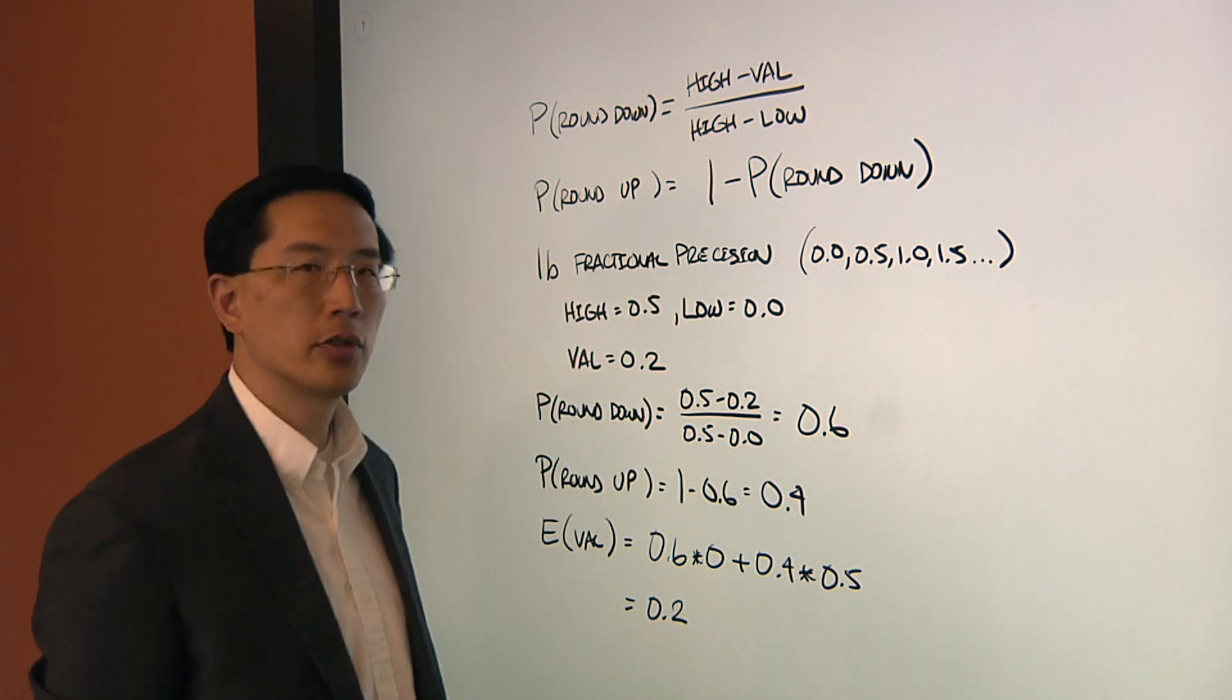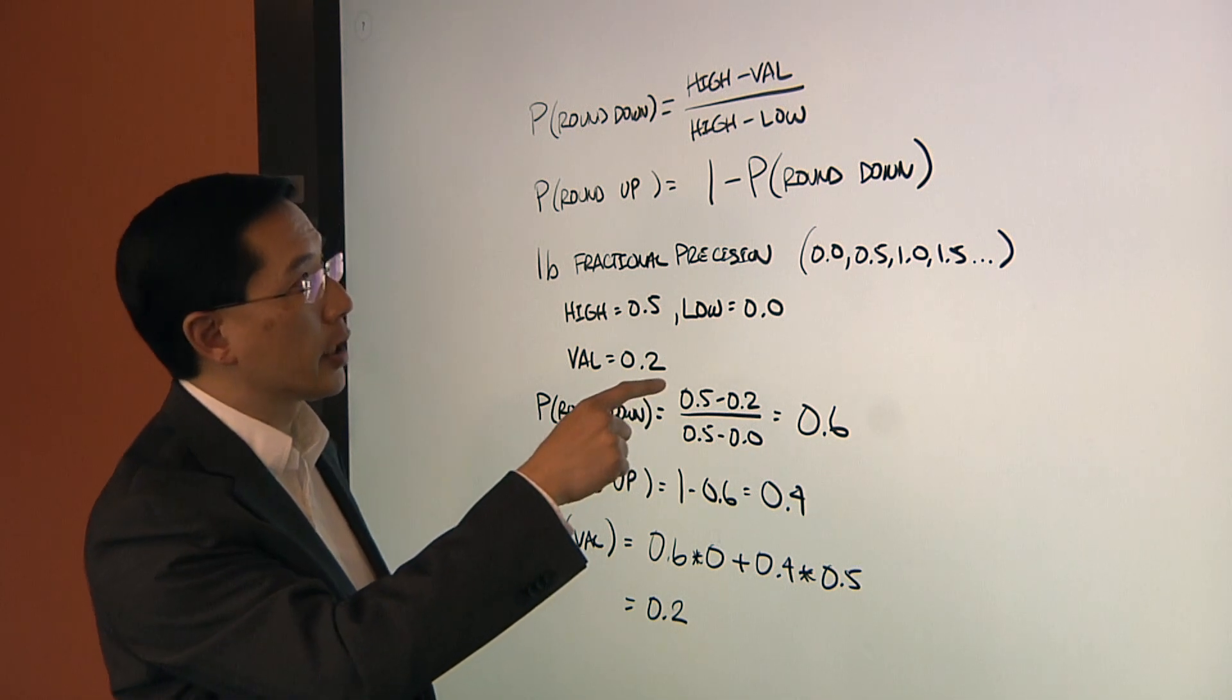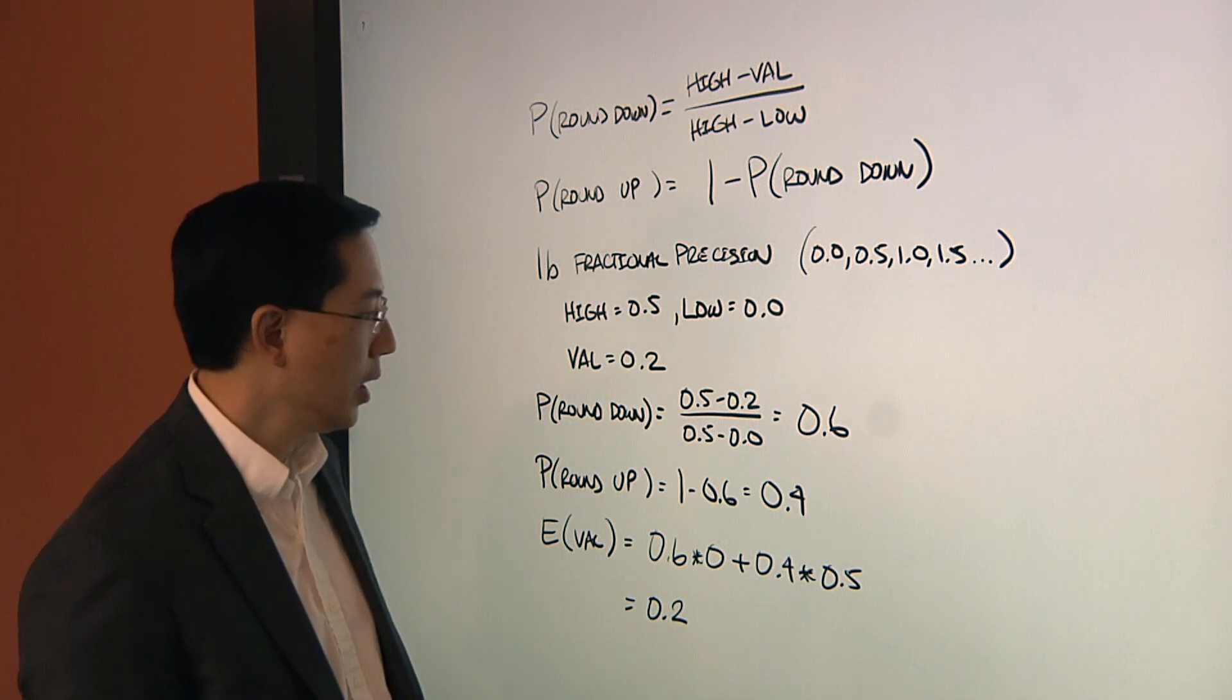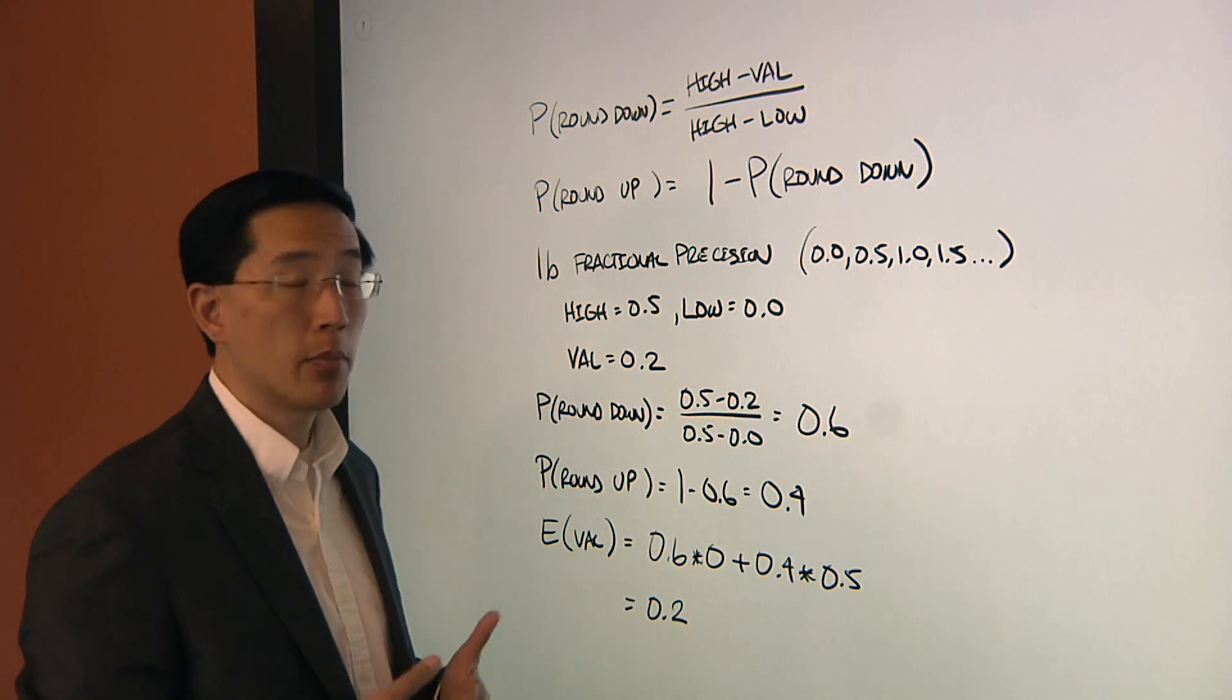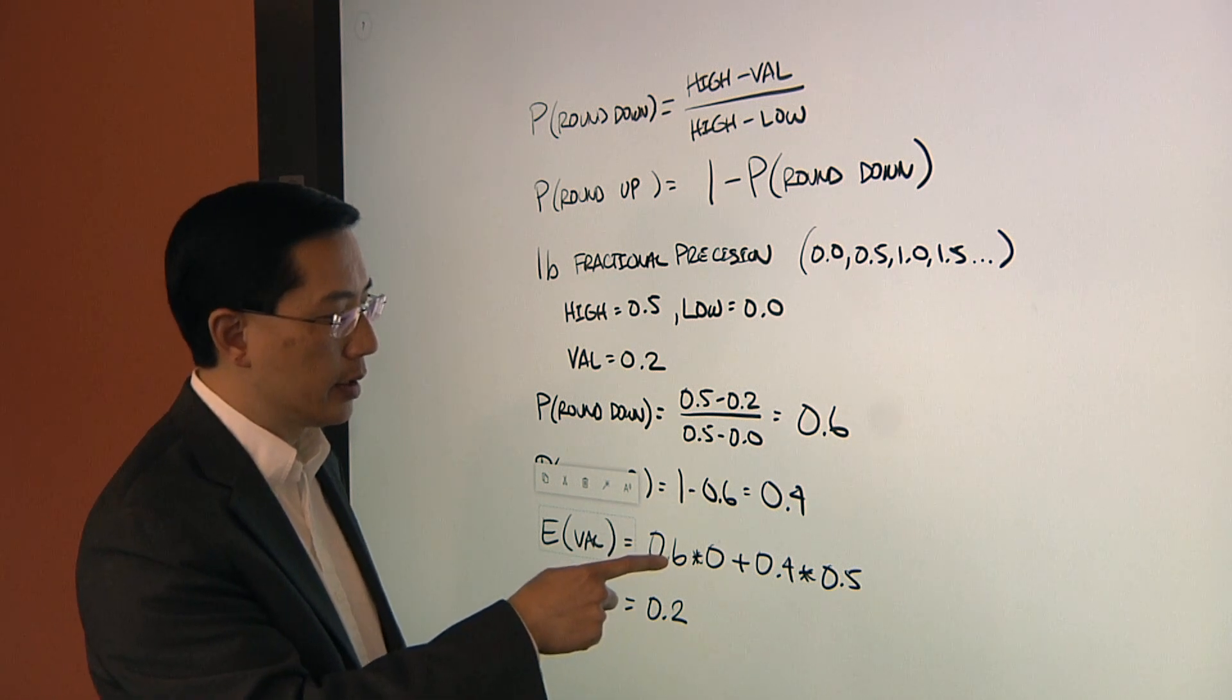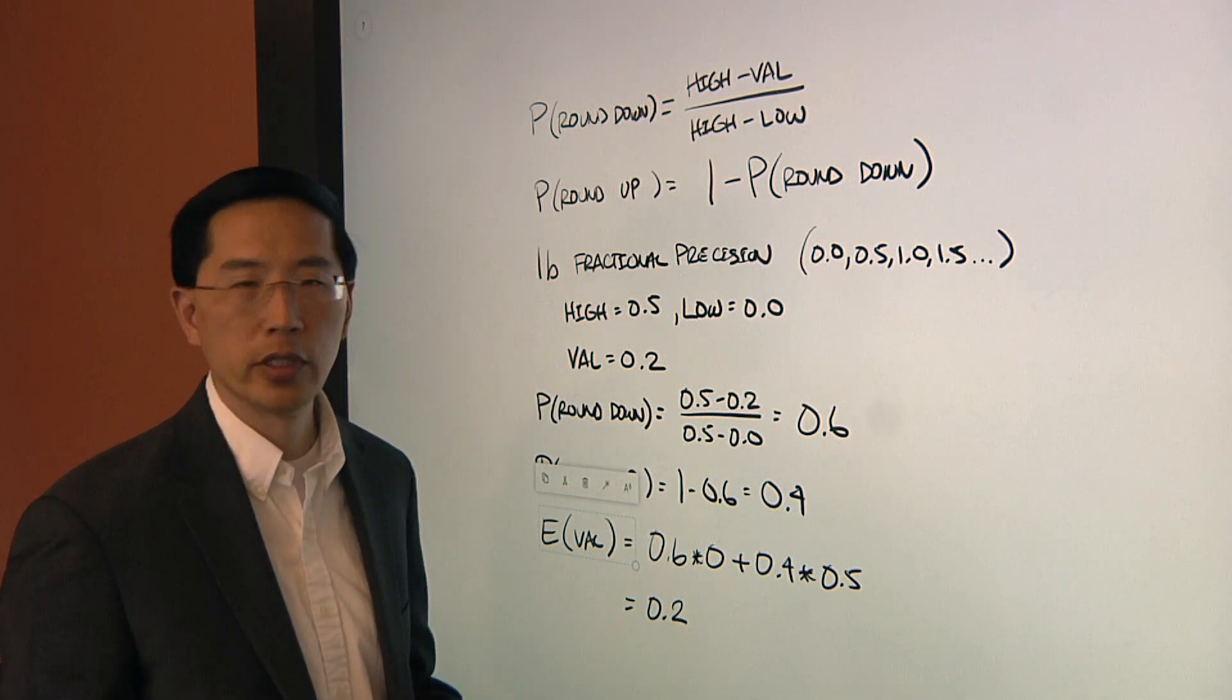So let me throw some numbers at this to show you how it works. So in this particular case with one bit fractional precision, my high value is .5 and my low value is .0. And so the value I really want to encode is .2. And so the probability that I'm rounding my number down is just the high minus the value, which is .5 minus .2, divided by that range .5 minus 0. So there's a 60% chance that I'm going to round my number down. And in the case of rounding up, it's just 1 minus that fraction, which is 40%. So 40% of the time I would take my .2, I round it all the way up to .5. So my expected value in the long run here is just 60% times 0, the number that I'm rounding down to, plus 40% times .5, the number that I'm rounding up to. And the long-term average, my expected value here is at .2, which is exactly what we wanted to encode.